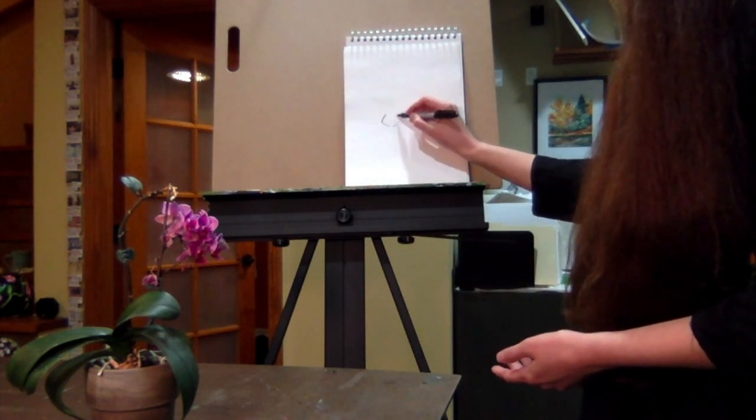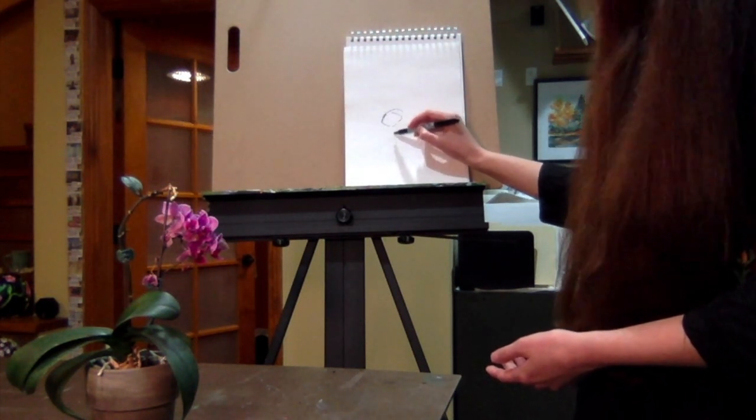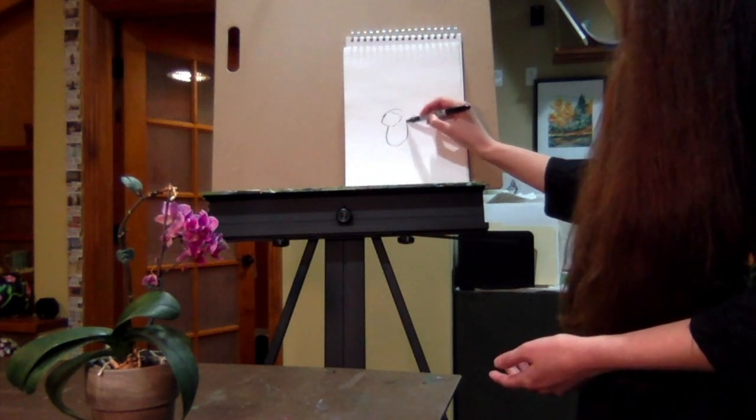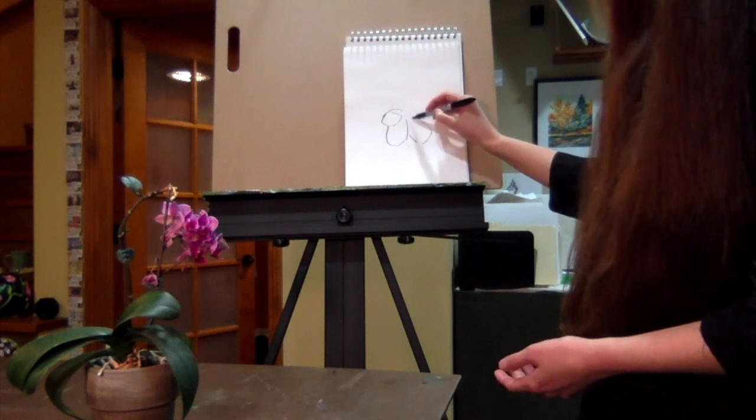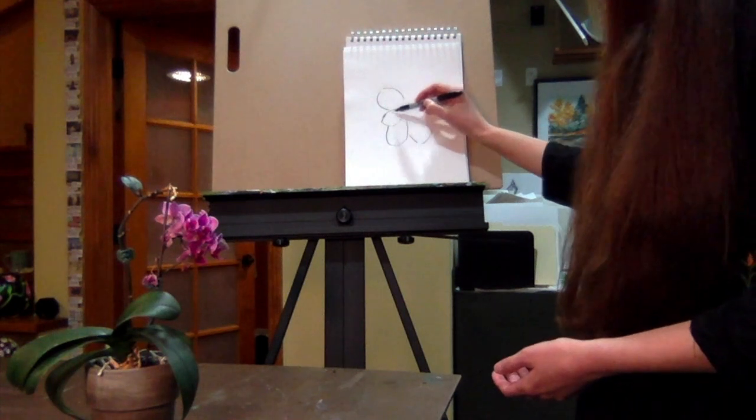So we're going to look at these really nice big shapes. And we're just going to go ahead. Remember, we're working general to specific. So we don't want to look at details right now. We just want to get down the main shapes that we see.